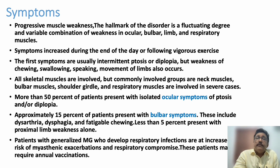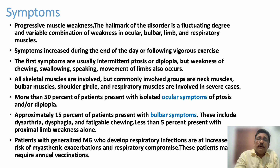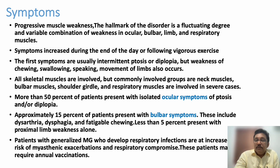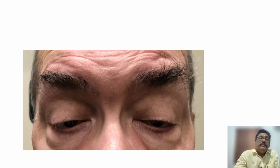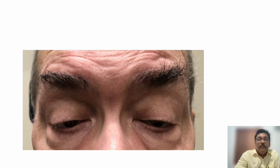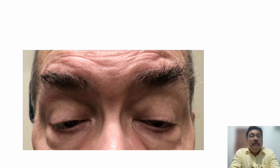Some patients will have bilateral ptosis and ophthalmoplegia only. Other patients will have only bulbar weakness without other muscle weakness. Some patients have both bulbar and other muscle weakness. You can see bilateral ptosis in the image — the patient is trying to lift his eyelids using the frontal muscles, so increased power is used there and a lot of wrinkles are visible on the forehead.